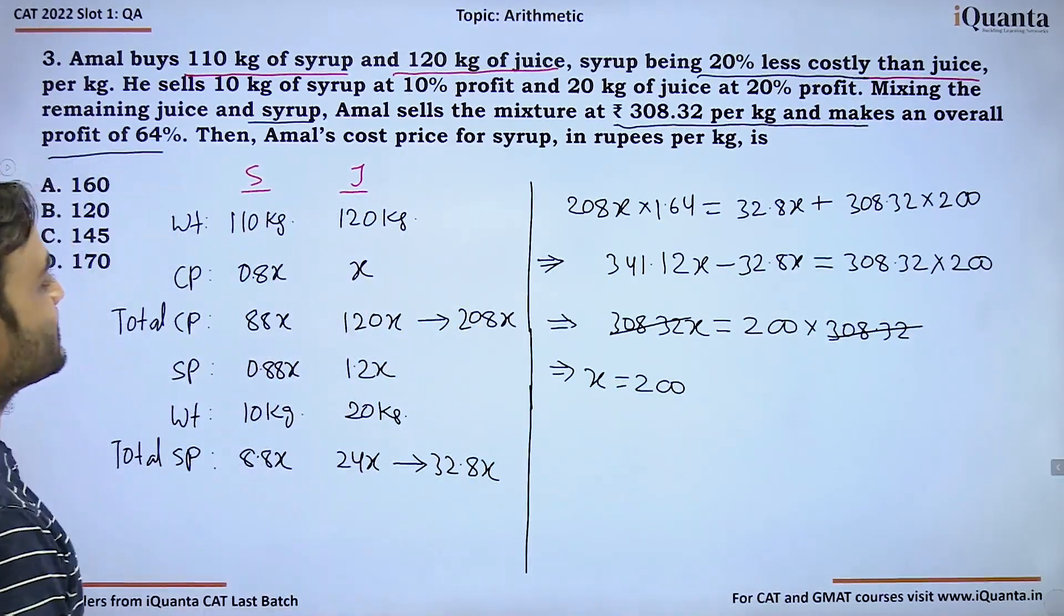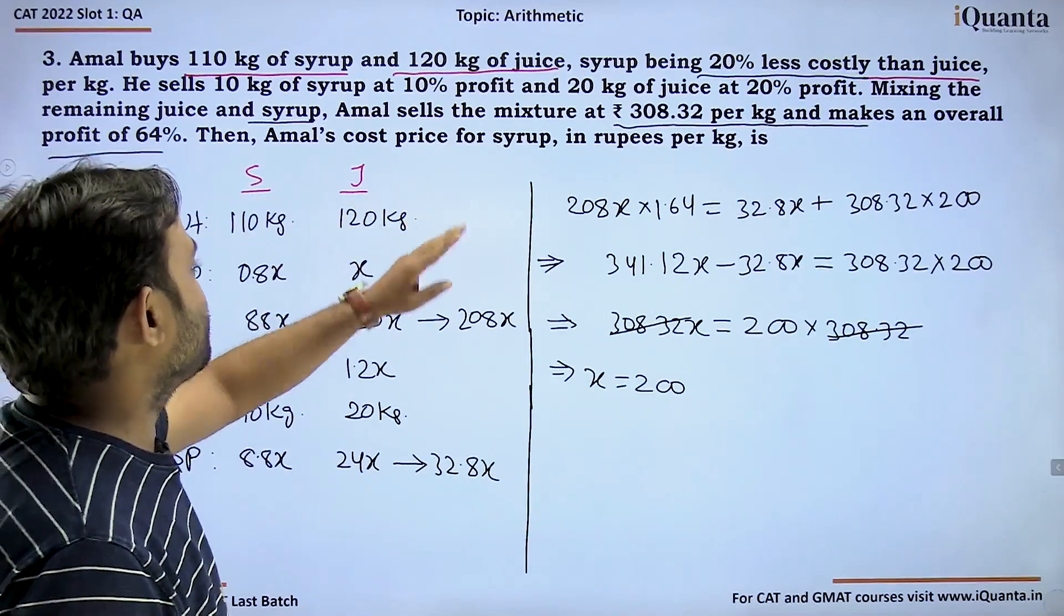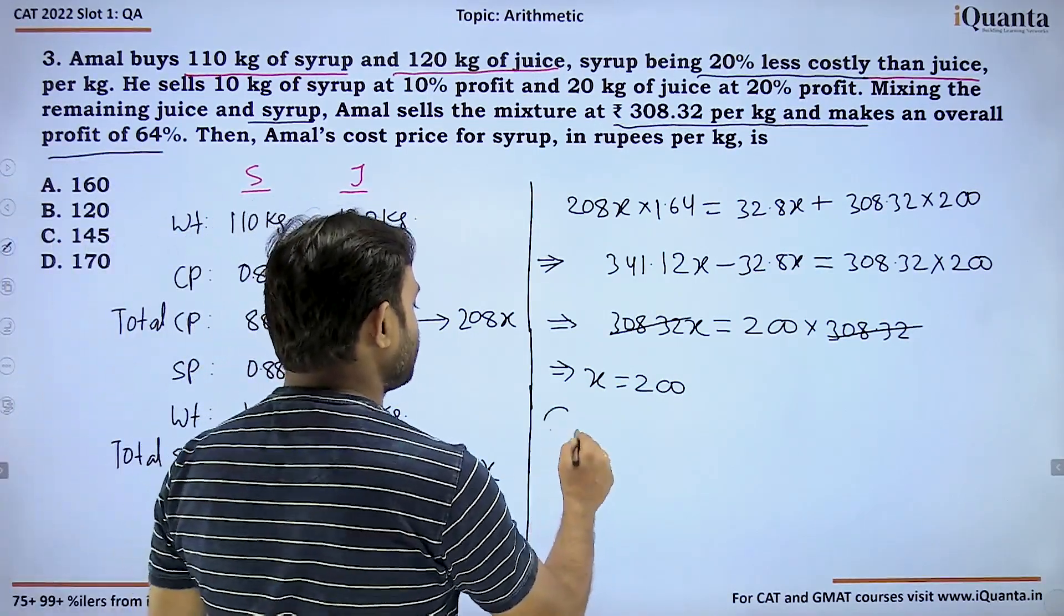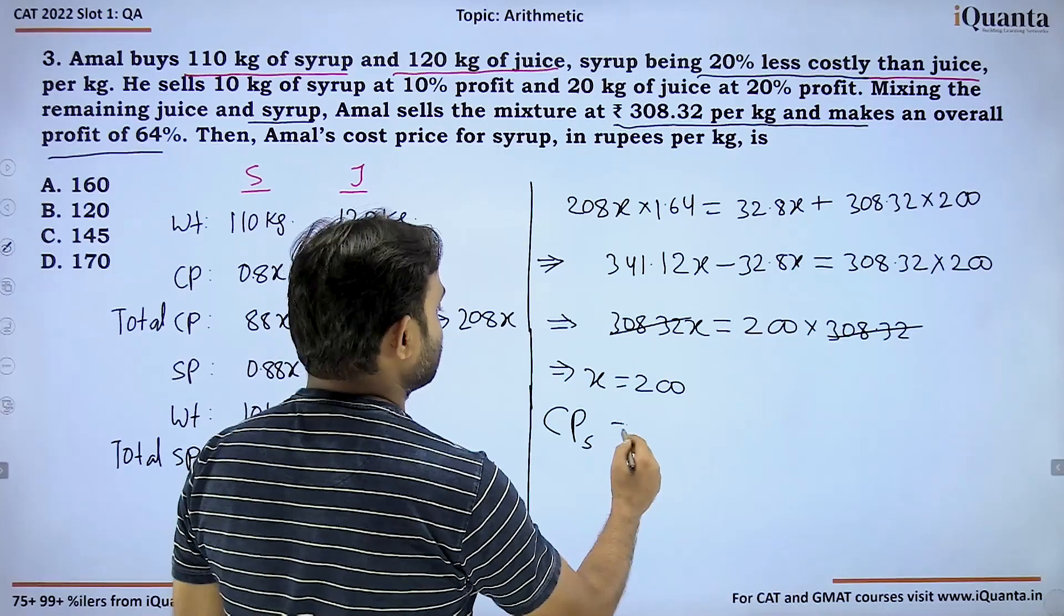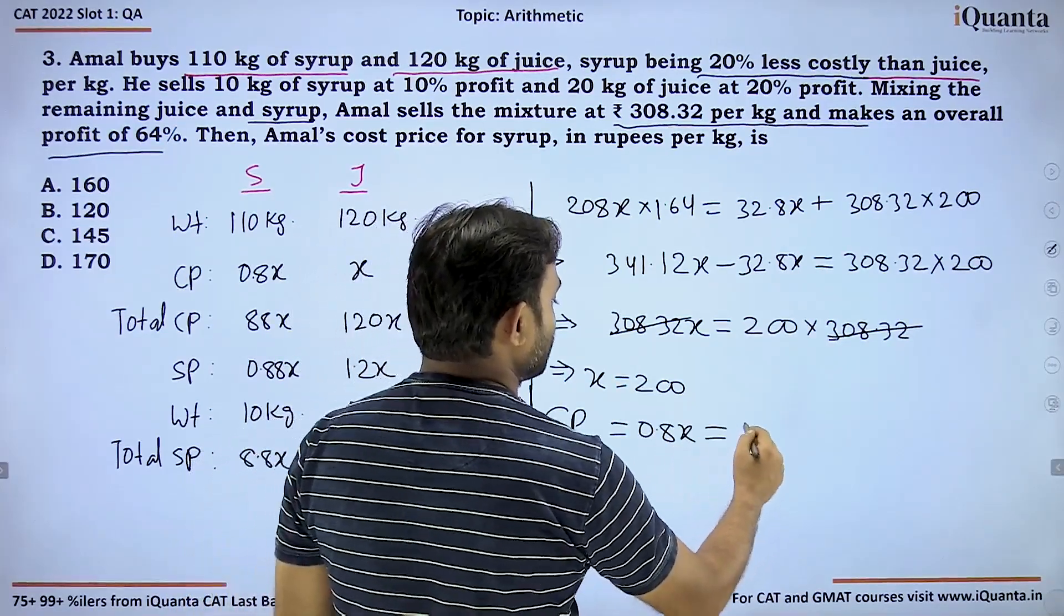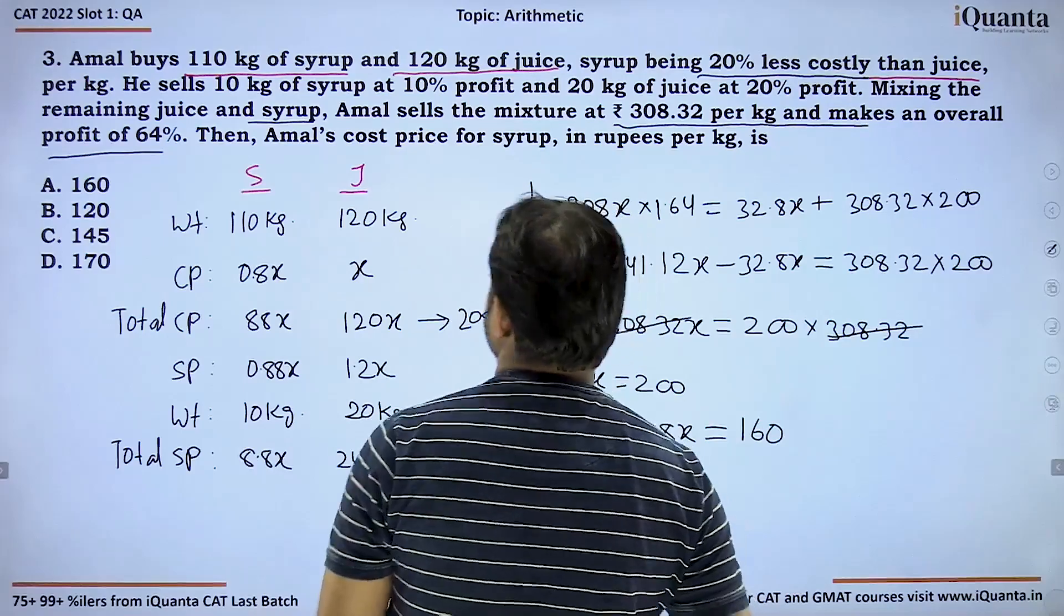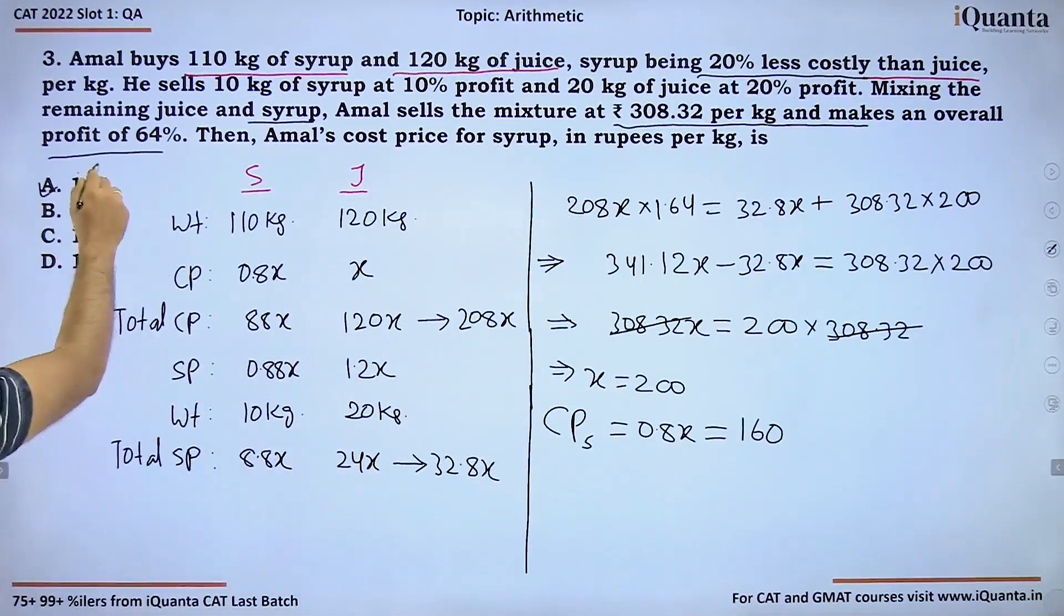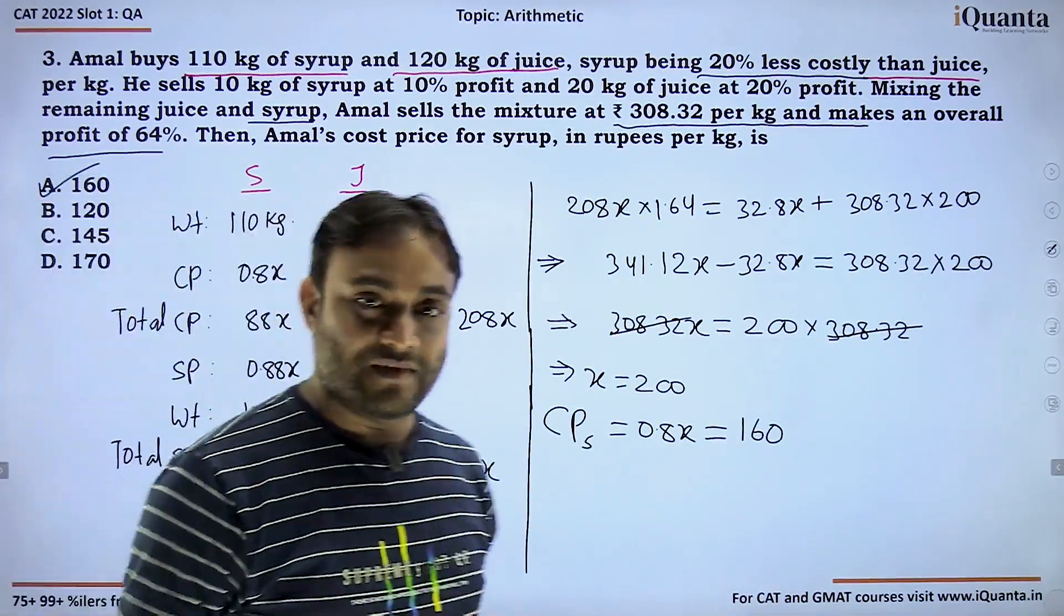If x equals 200, Amal's cost price for syrup is 0.8x which is nothing but 160 rupees per kg. That is option A.